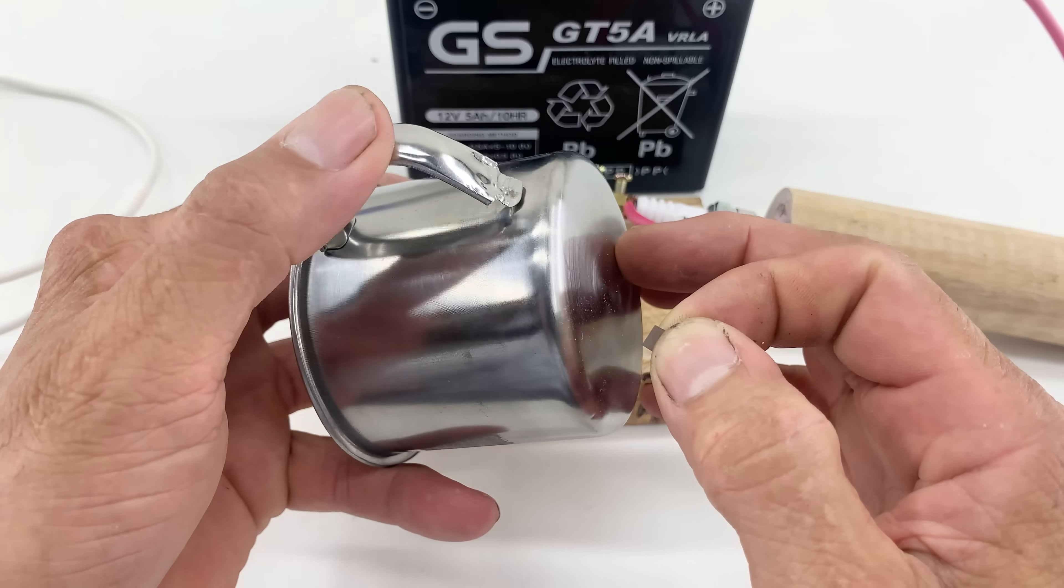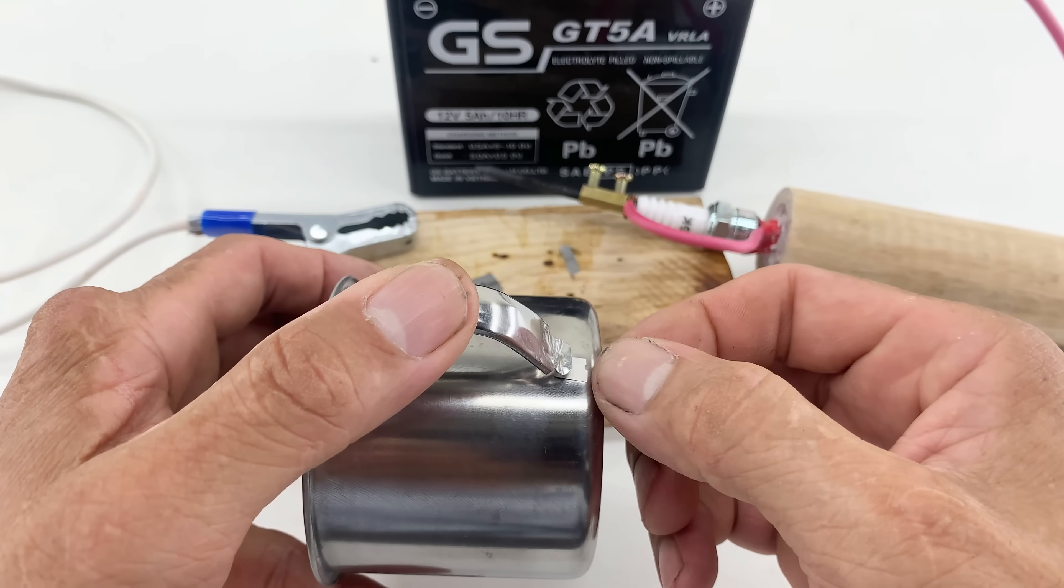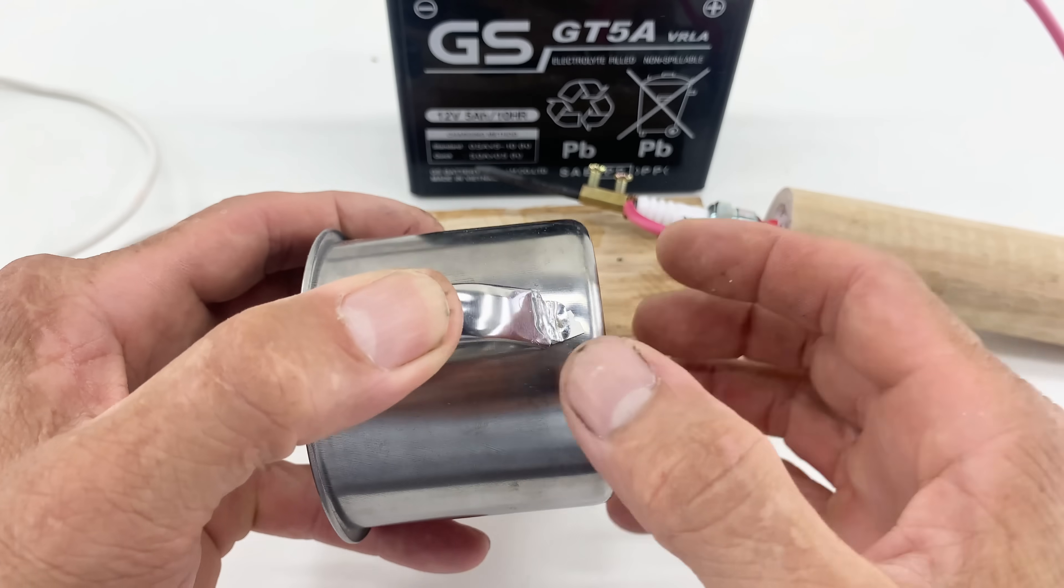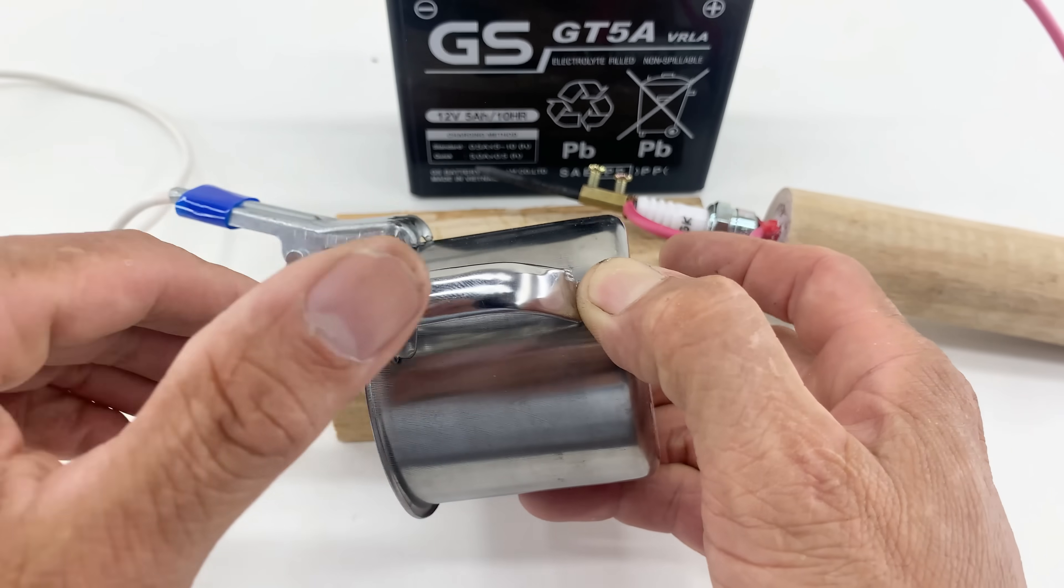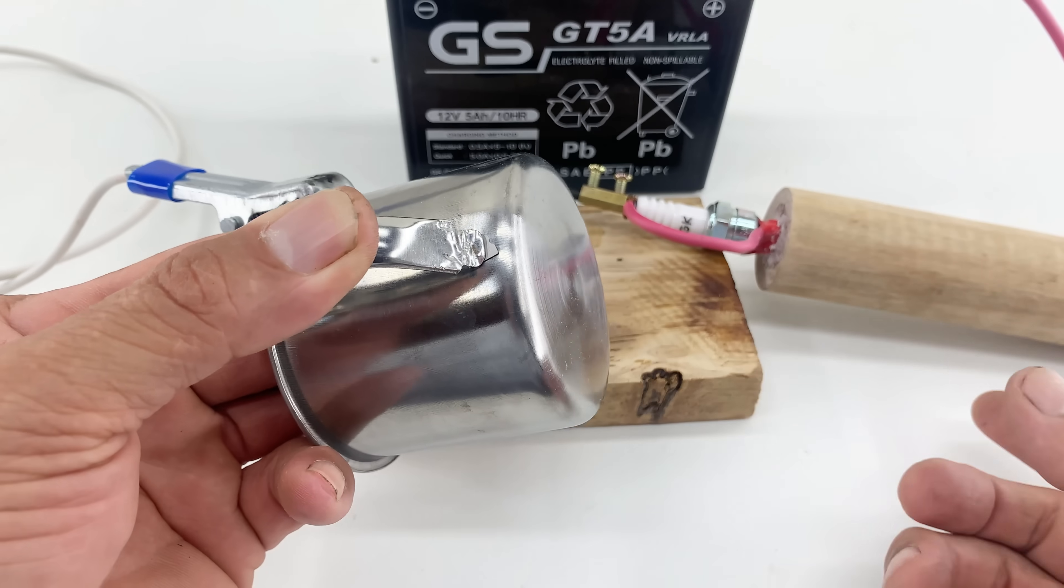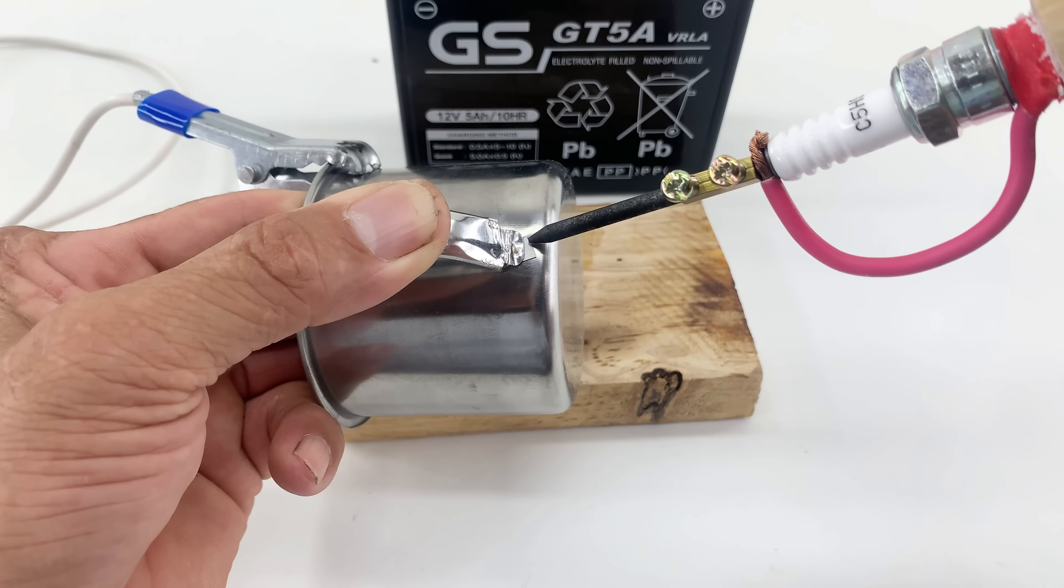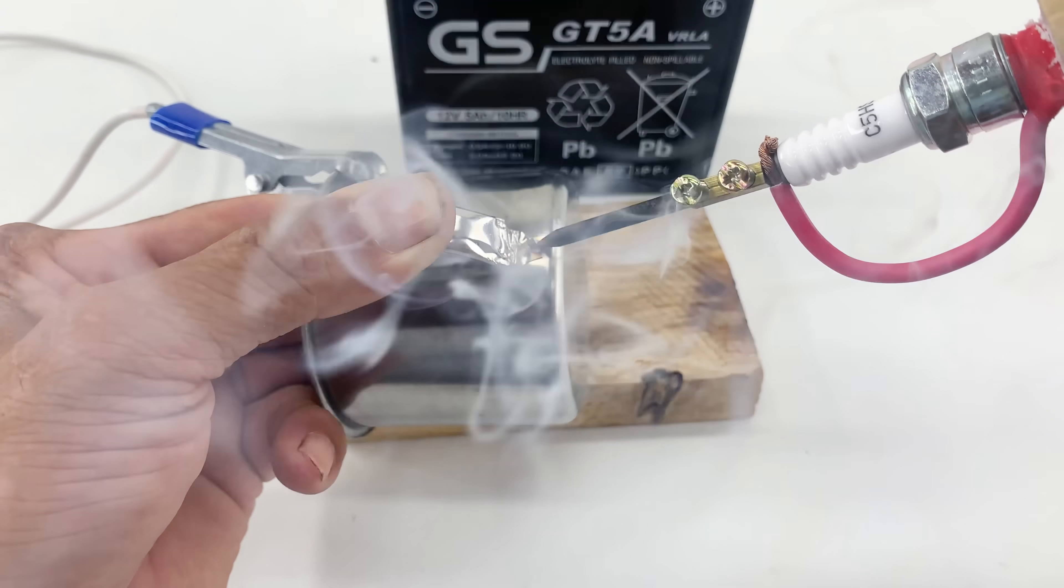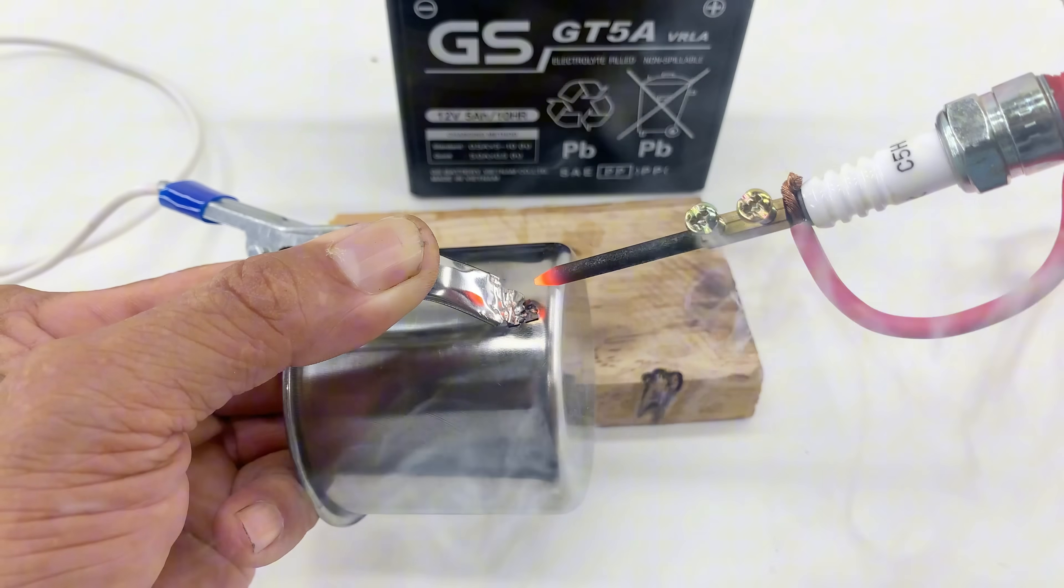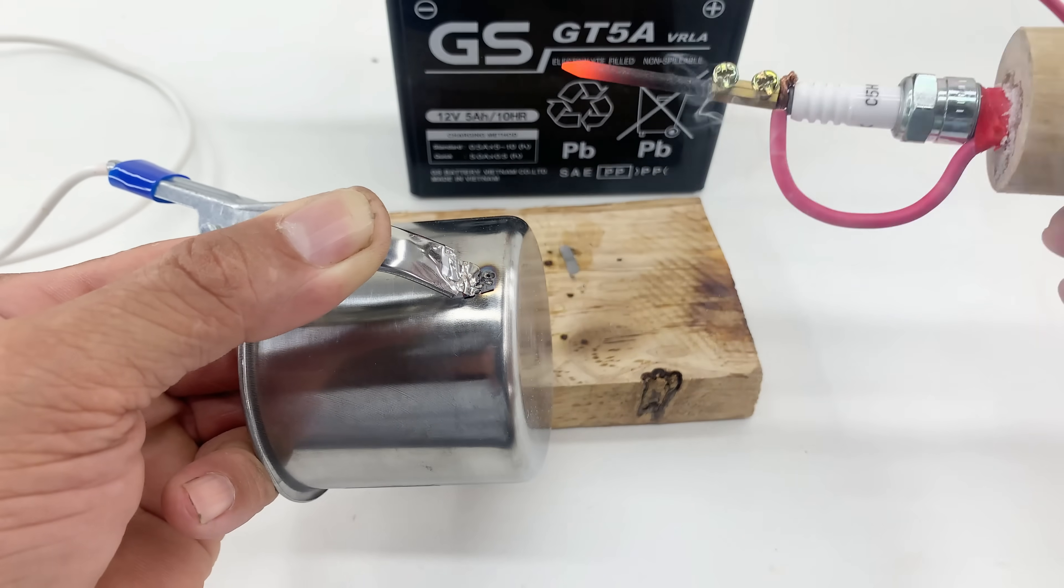Let's try it again on this small metal cup. As the carbon rod touches the metal, you can see the immediate reaction. The metal heats up rapidly and begins to melt, demonstrating the tool's ability to tackle various metal surfaces efficiently.